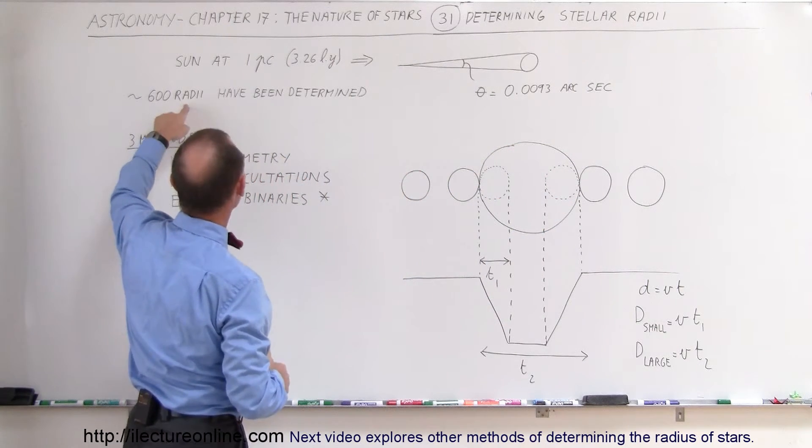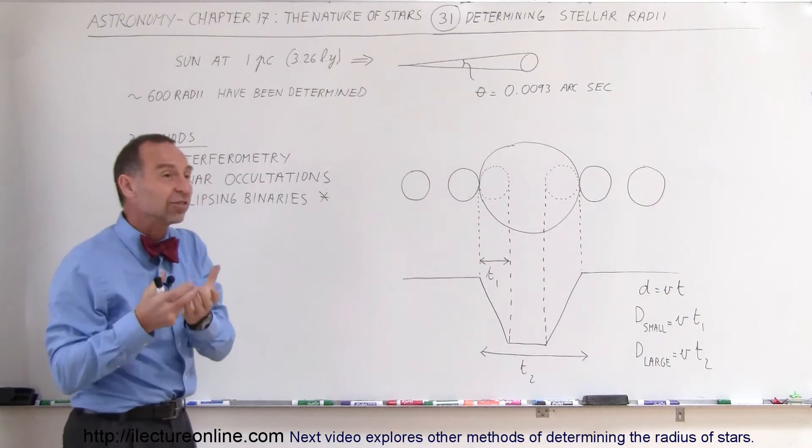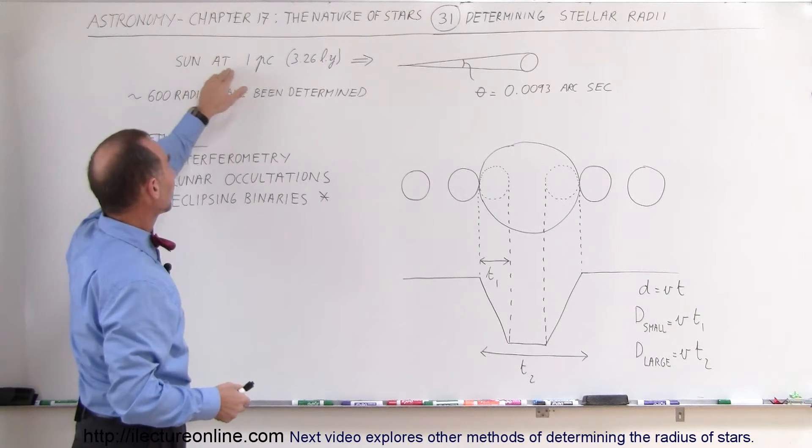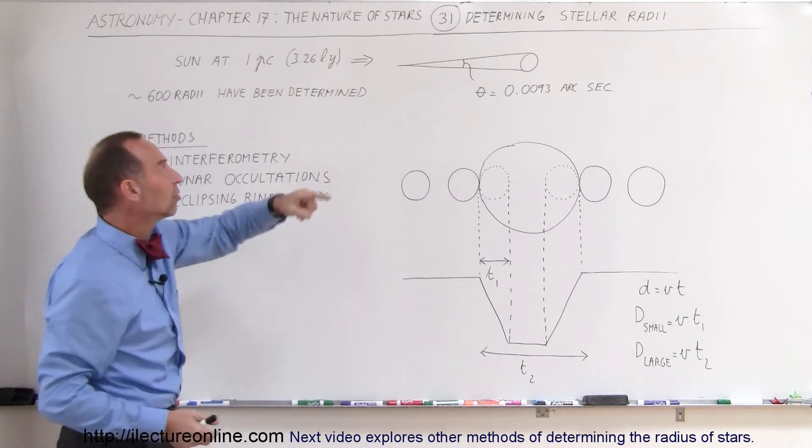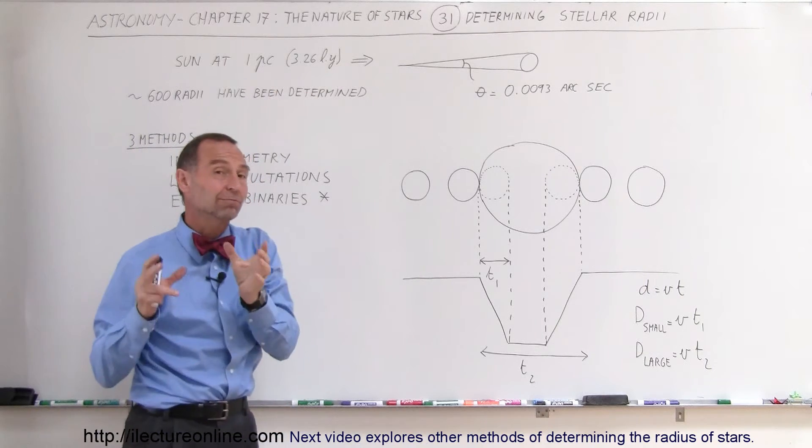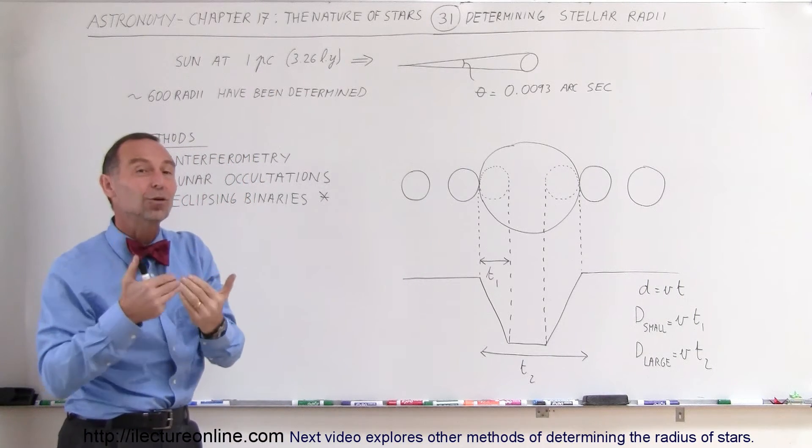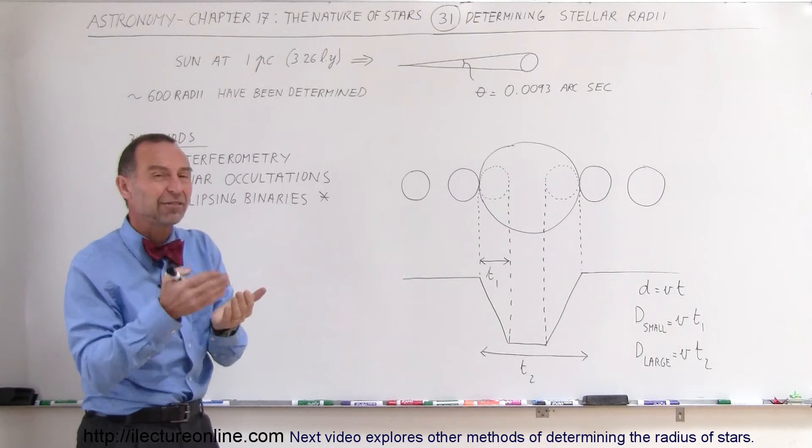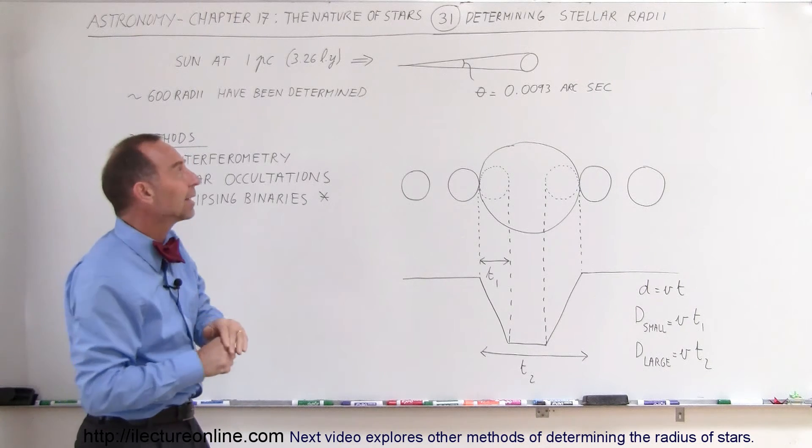If we were to take a look at the sun, for example, let's say there's a star the size of the sun and we place that star at a distance of one parsec, which is 3.26 light years. Now there's no star that close to us. The closest star to us, of course, is Alpha Centauri, which is about 4.3 light years.